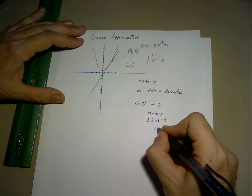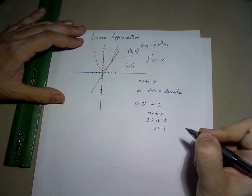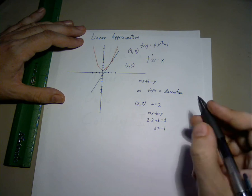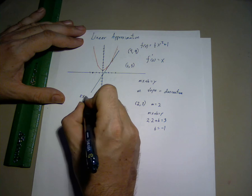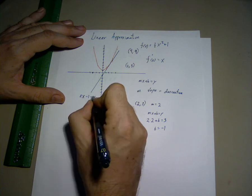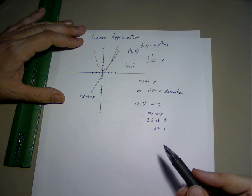Ergo, b equals minus one. The equation of the tangent line is 2x minus 1 equals y. That is our linear approximation.